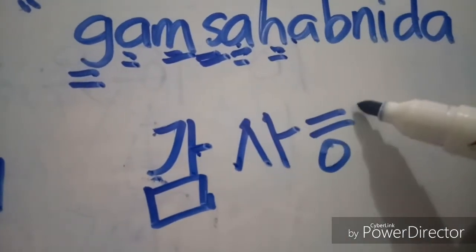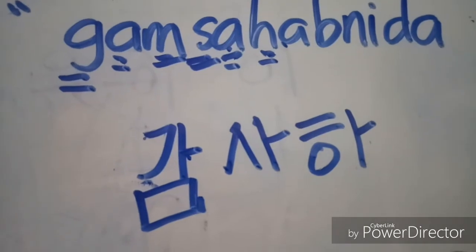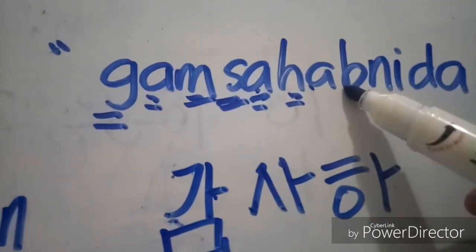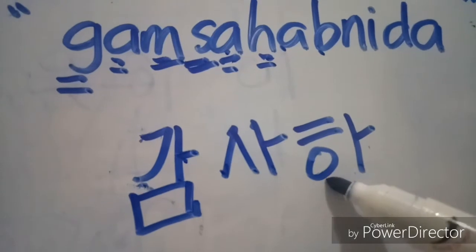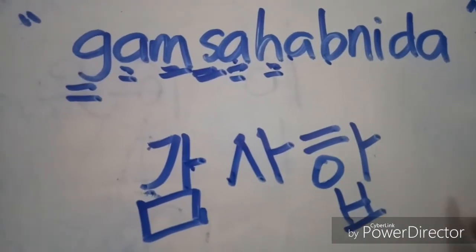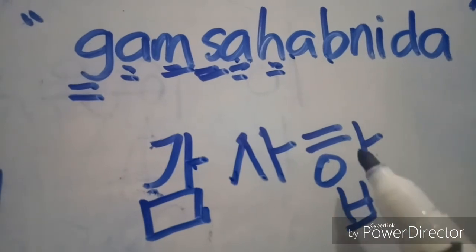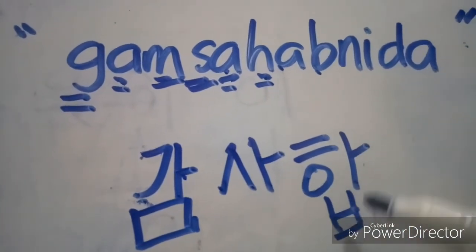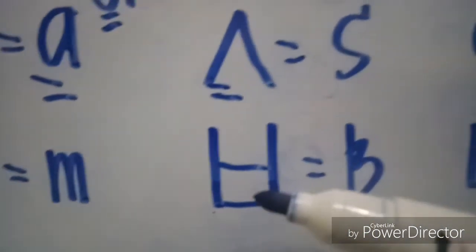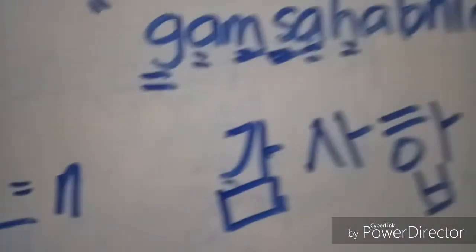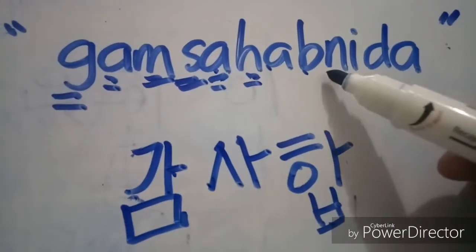And then A, and then B. That is a final consonant — three letters in one syllable.